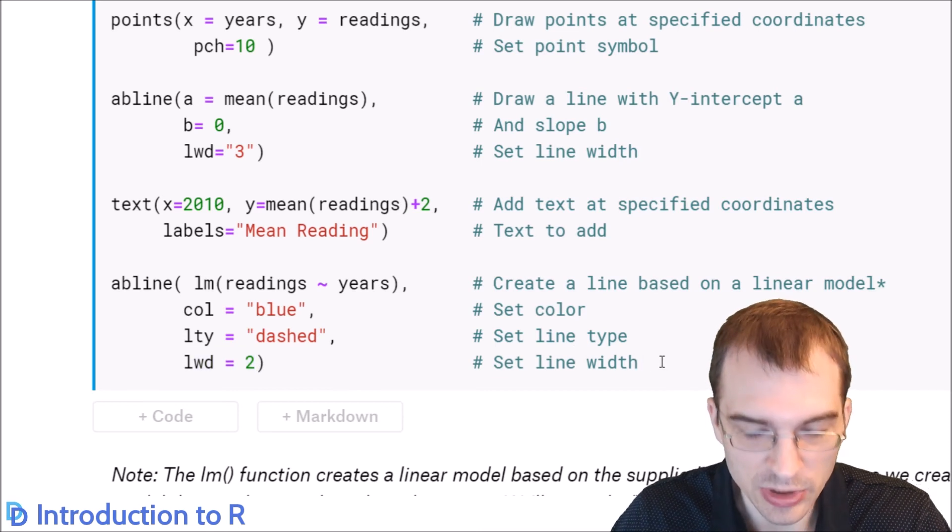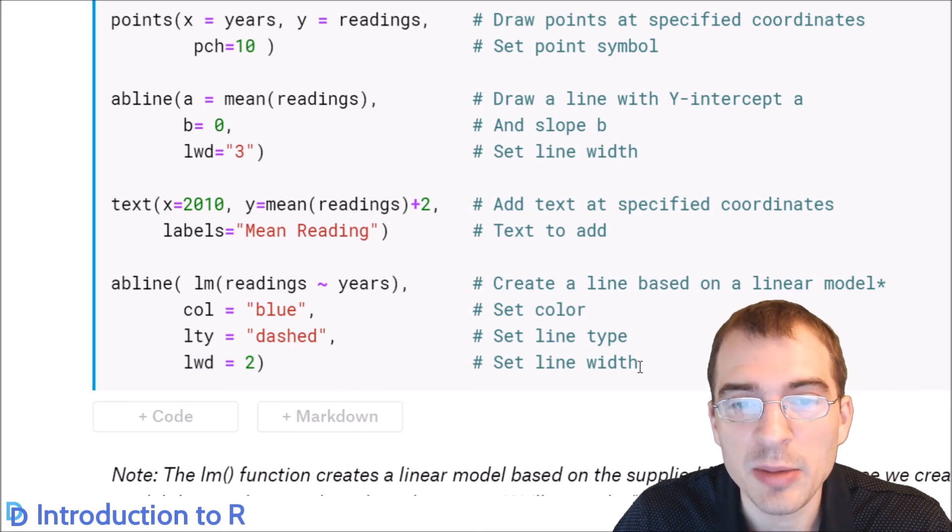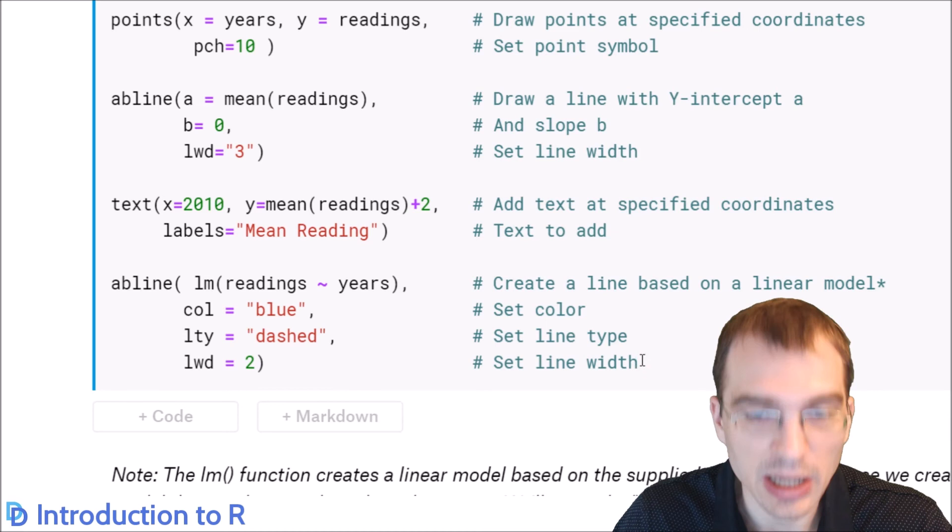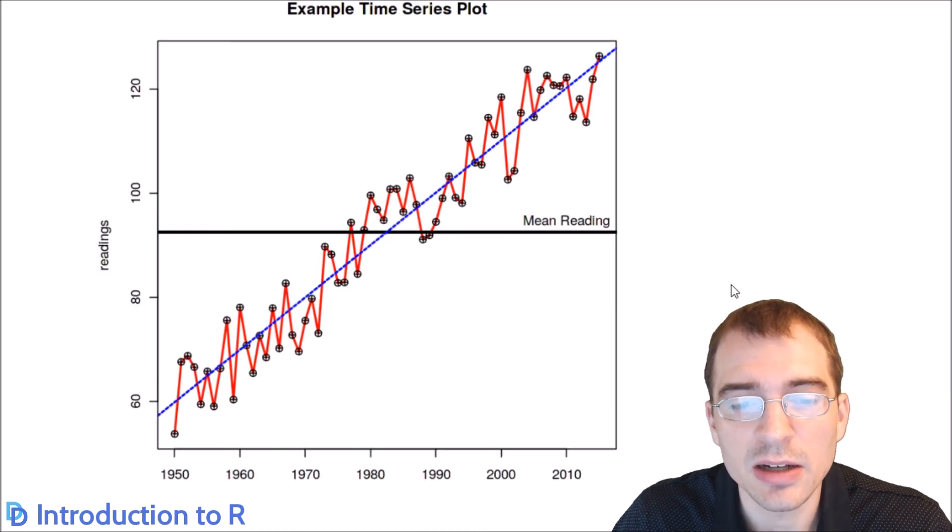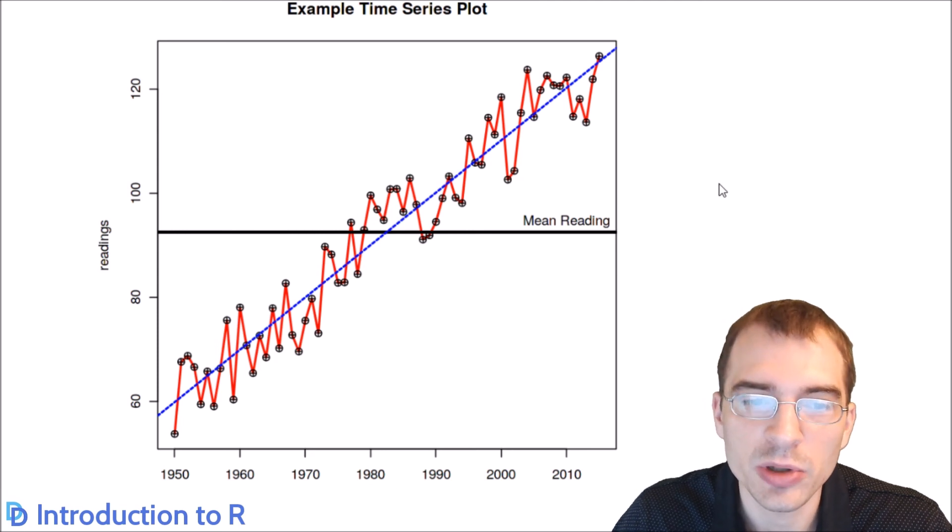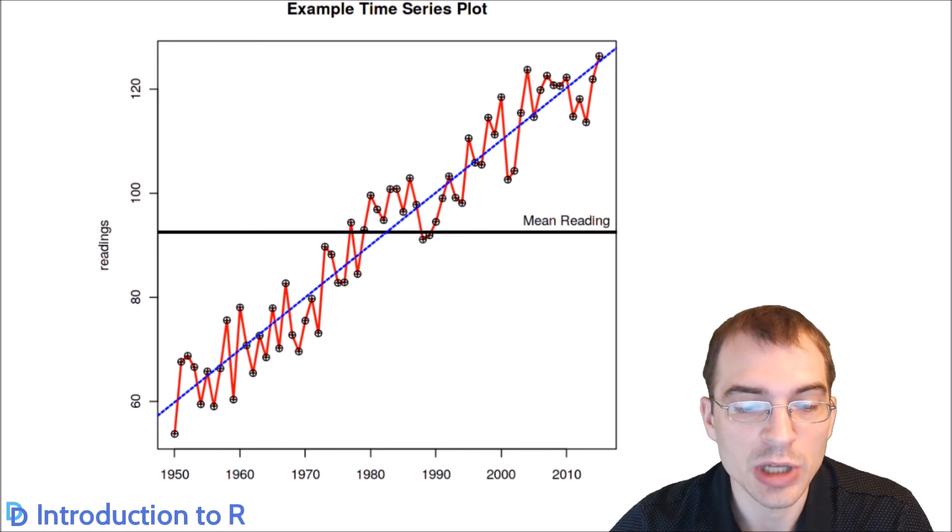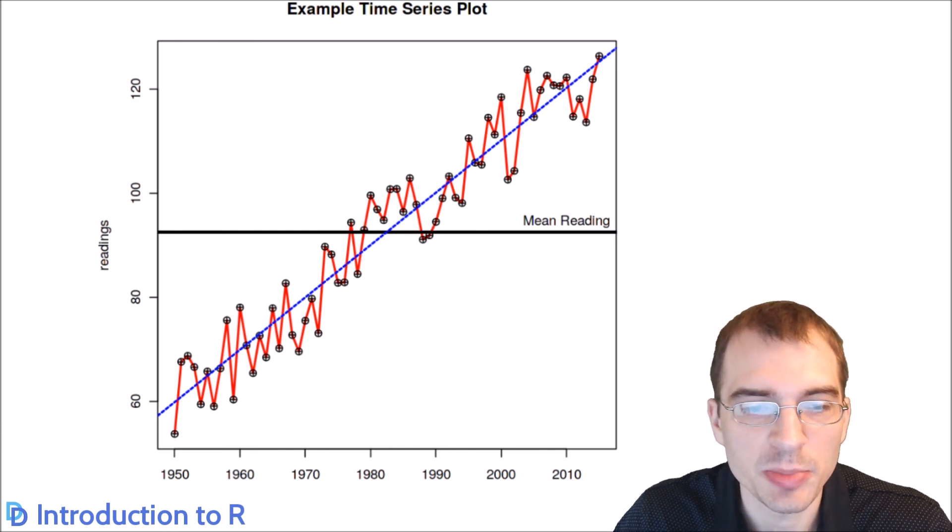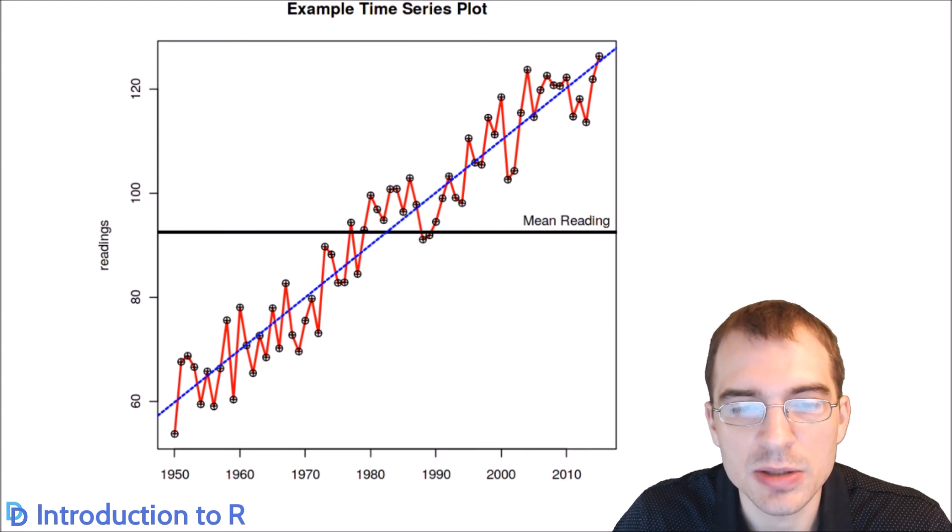So let's run this. And we should see our same line plot, but with a bunch of new elements added to it. So as you can see, the underlying data of the line plot is the same in this red line, but we've added a few more things to it. It has a title, and it's red with some dots at the points. We have a line for the average reading, and we also have this blue dotted line indicating the trend line. Being able to construct plots in this layered fashion is kind of nice.